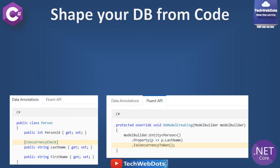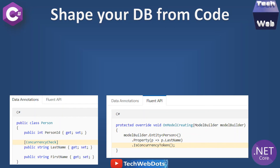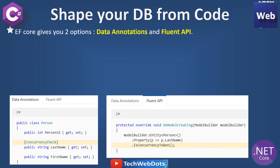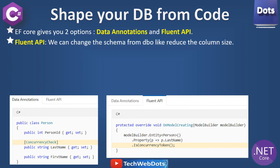So if you want to shape your database from your code, there are two ways: one is Data Annotation and one is Fluent API. These two options are provided by Entity Framework Core. With Fluent API, we can change the schema from DBO, reduce the column size, change column name, or add a column.